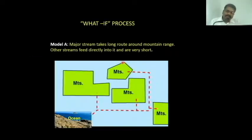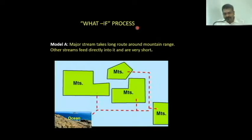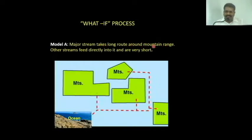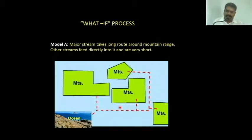When you prepare many models, a 'what-if' process always arises — what if you change, modify, or artificially think about how you are going to use the landscapes. Model A shows a major stream taking a long route around the central mountain range, while other streams go directly into the ocean over a very short distance.